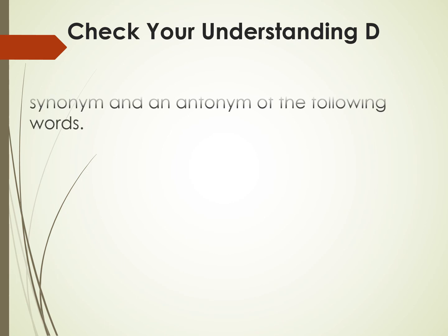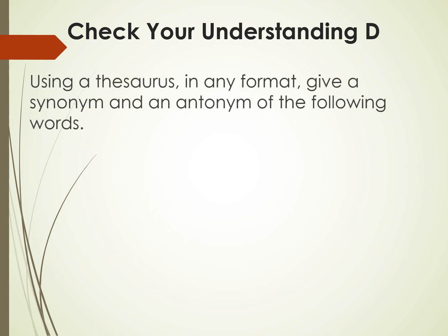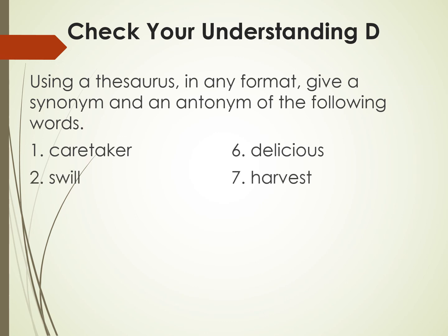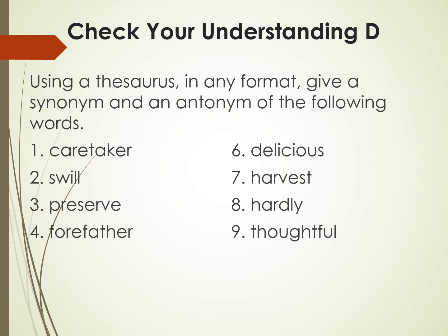In Check Your Understanding D, you will need a thesaurus, again in any format. This time, you need to give a synonym and an antonym of the following words. Number one: caretaker. Number two: swill. Number three: preserve. Number four: father. Number five: perfumed. Number six: delicious. Number seven: harvest. Number eight: hardly. Number nine: thoughtful. And number ten: scorched.